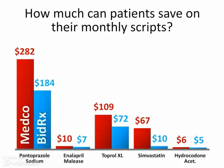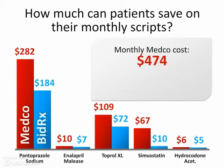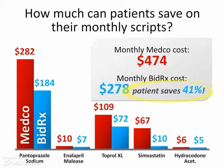It's clear from the size of the columns that Medco prices are greater than bidrx prices. I've also changed the colors: Medco is now red, which is a warning color — generally a negative color in financial terms — and bidrx is light blue, which is soothing and a commonly used healthcare color. The next animation shows the total monthly Medco cost and then the total monthly bidrx cost, with a little swoosh circling the savings, making it completely obvious that bidrx cost is lower.